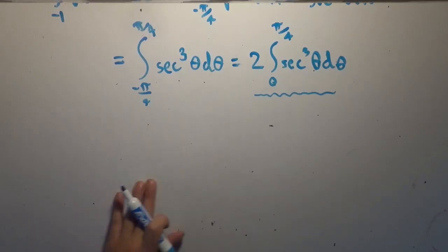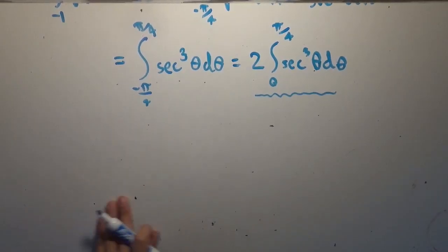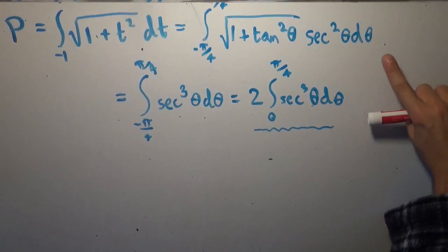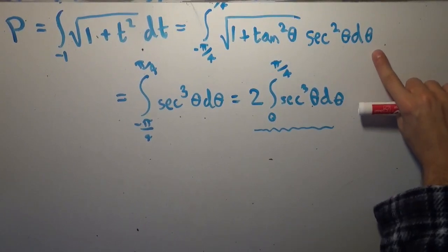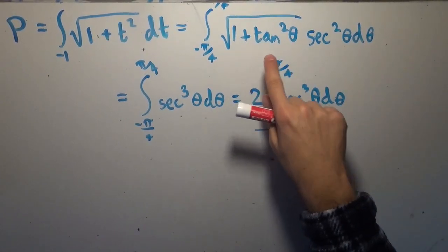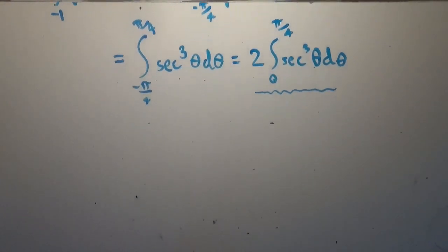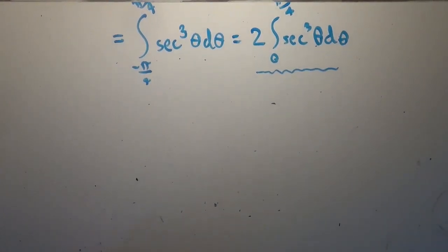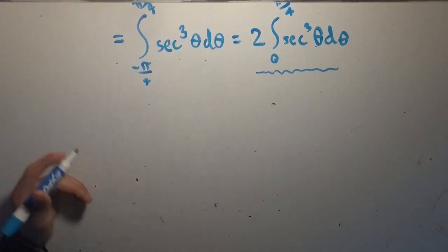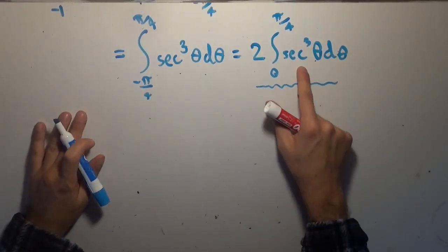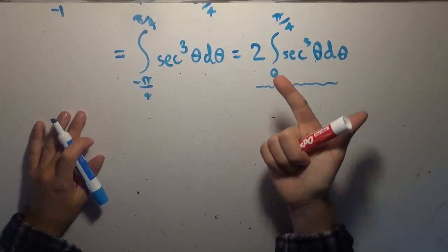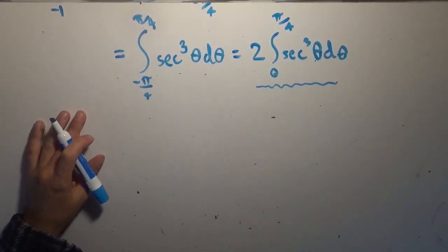It's quite easy to try and solve. What we're actually going to do is sort of put it back in this form here, where we have secant times secant squared, and we're going to use integration by parts. So we know that secant cubed is secant times secant squared.